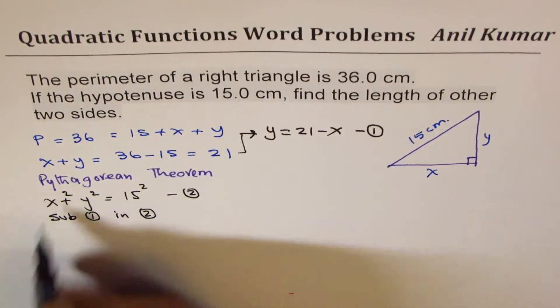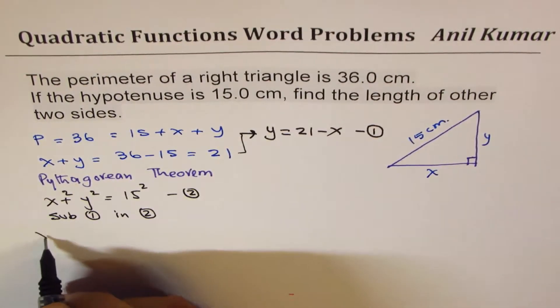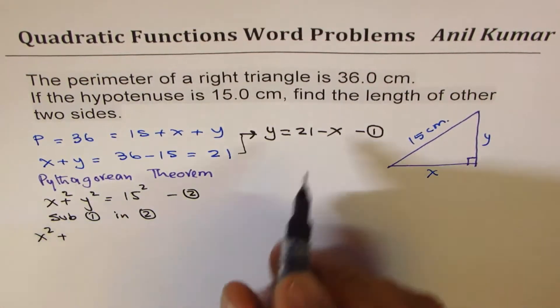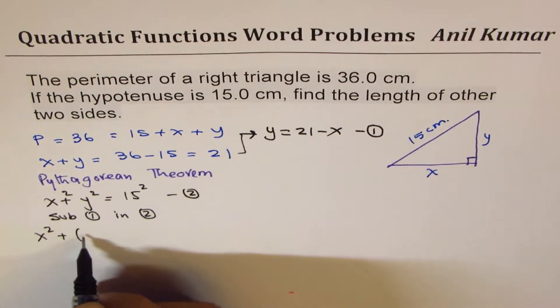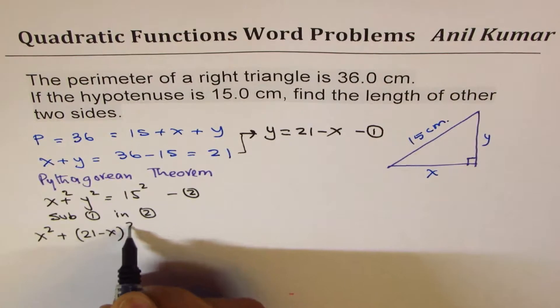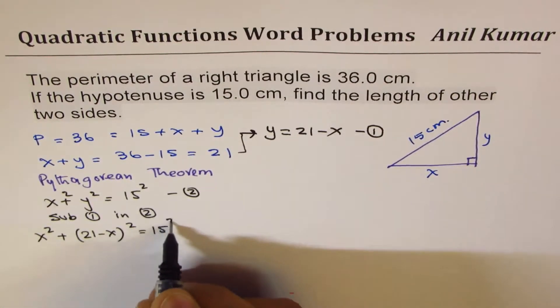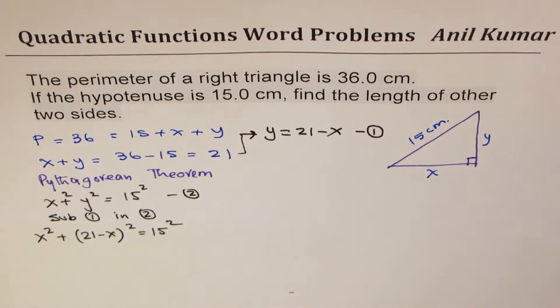I get an equation in one variable. Instead of Y I'm writing 21 minus X whole square equals to 15 square. Now we can expand and simplify.